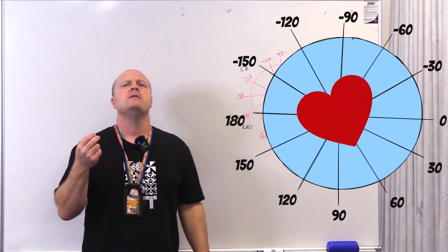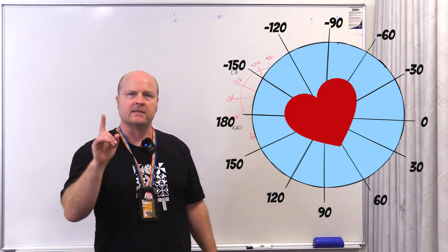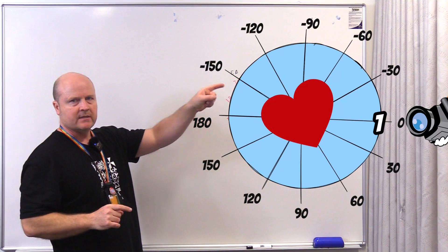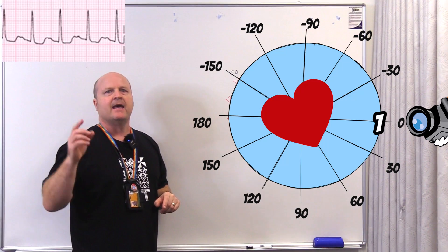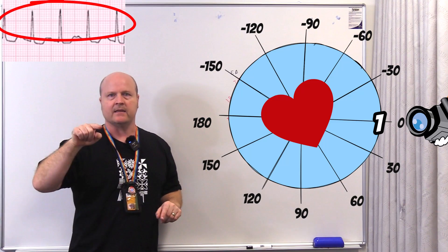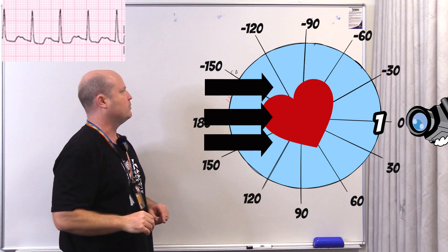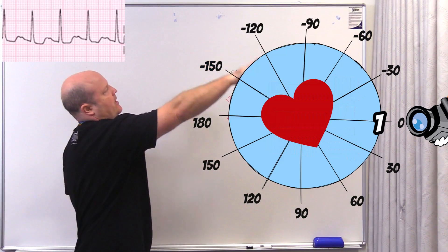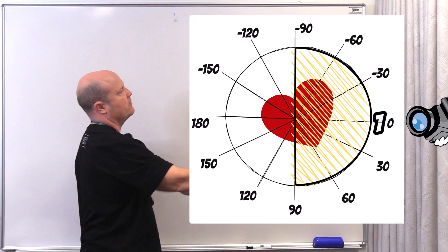Okay, now how do we calculate this on our patient? First thing we can do is look at lead one. Lead one sits at zero degrees, looking in that direction. So if we look at the QRS complex and if it's mostly bumping upwards, if it's more positive than it is negative, then most of that current is going toward lead one. If we look at this diagram and shade in that side, then we know the axis is going to be somewhere in that direction.